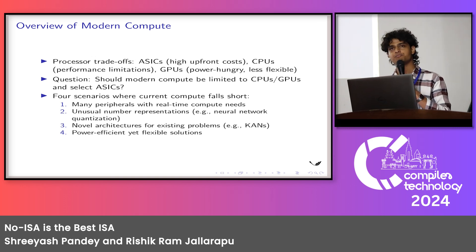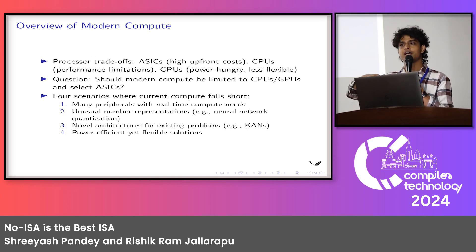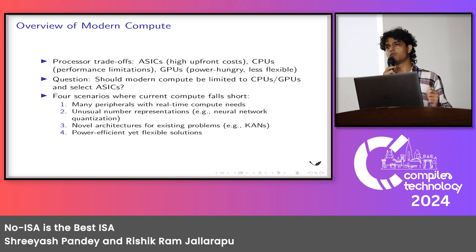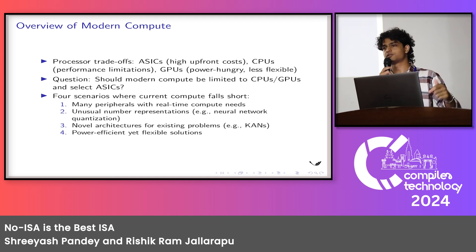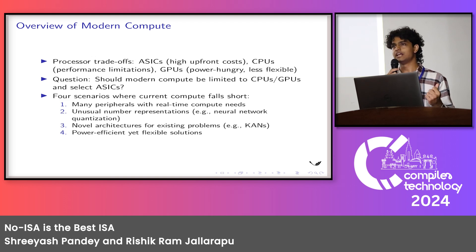Third is new architectures for old existing problems. We have had MLPs for a long time. Recently a paper was published on Kolmogorov-Arnold Networks. KANs are basically an optimization over MLPs, and from a compute perspective, slightly different. So what happens to the ASICs designed for traditional MLPs? It essentially asks for new ASICs to be designed, and we repeat the 1-2 year ASIC design cycle again. And the last point is that we also have to be wary of power consumption. We need fast, capable computers that are also very power efficient.